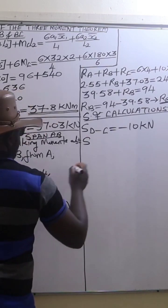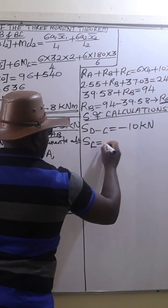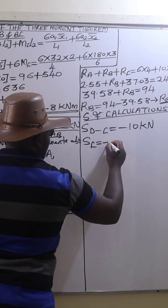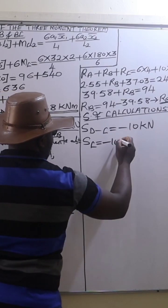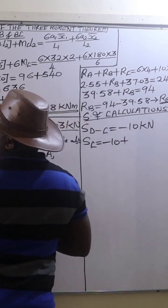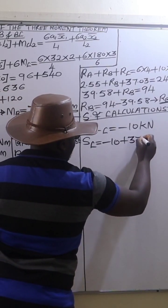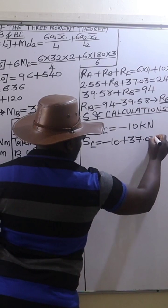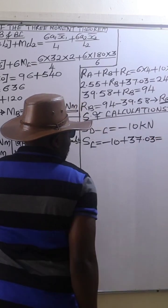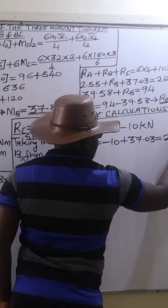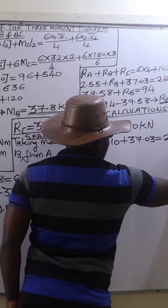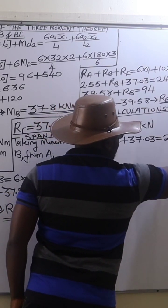Then we go to shear force at C, and the shear force at C will be this negative 10 kilonewtons. We add the reaction at C, which is 37.03, therefore plus 37.03, which is going to give us 27.03 kilonewtons.